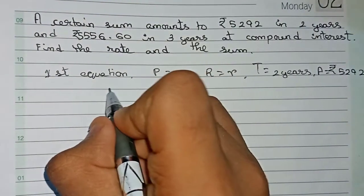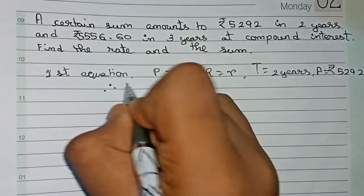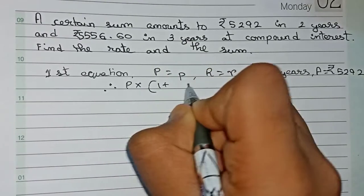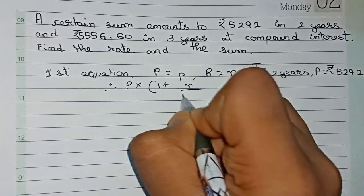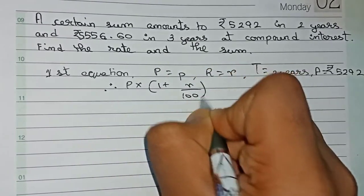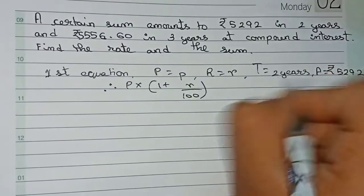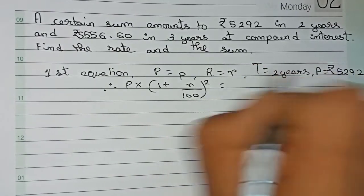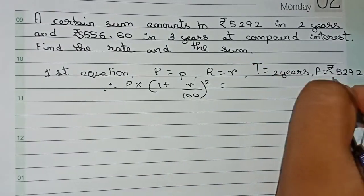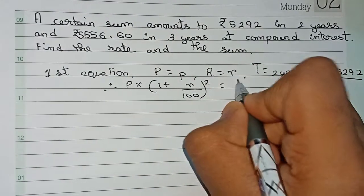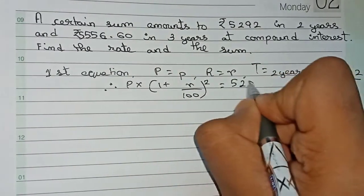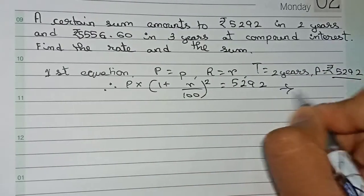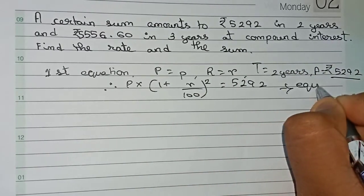So therefore our first equation is: P into (1 + R/100) to the power n, where n is the value of time that is 2. So write to the power 2 is equal to the amount, which is 5,292. This is our equation number 1.